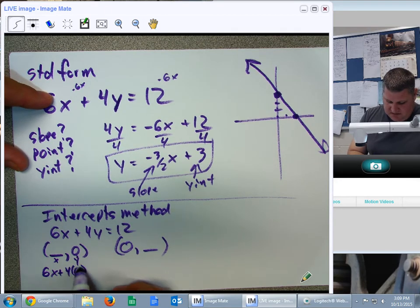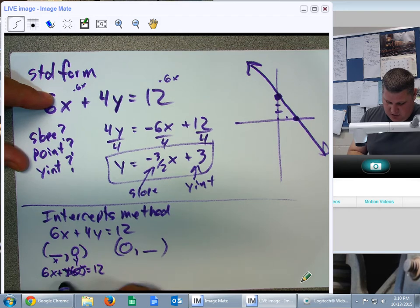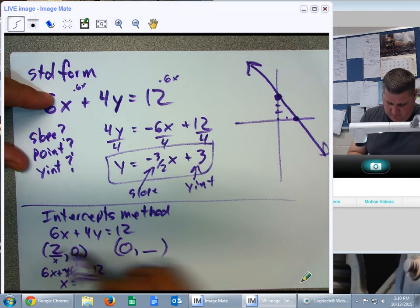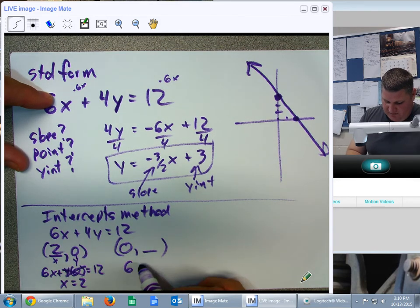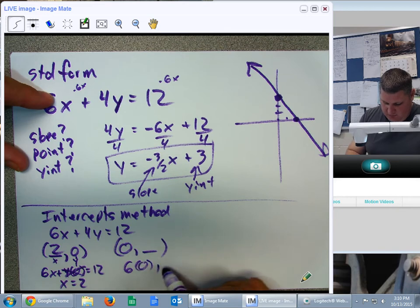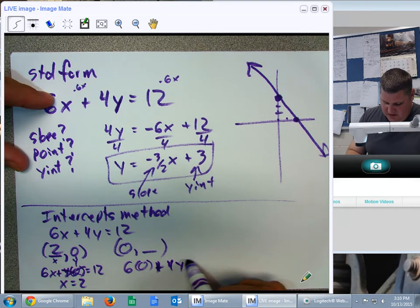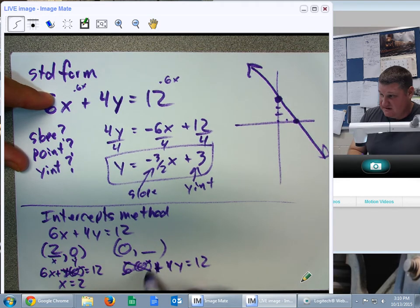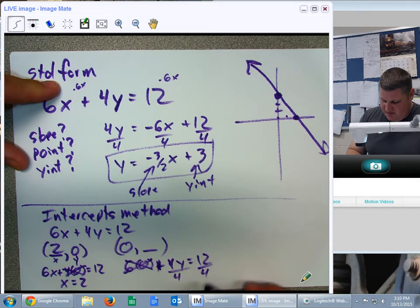So, 6x plus 4 times 0 equals 12. That's gone. x equals 2. Over here, we have 6 times 0 plus 4 times y equals 12. Well, 6 times 0 is gone. Divide both sides by 4. Y equals 3.